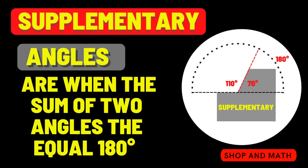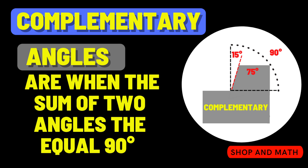Supplementary Angles are when the sum of two angles equals 180 degrees. Complementary Angles are when the sum of two angles equals 90 degrees.